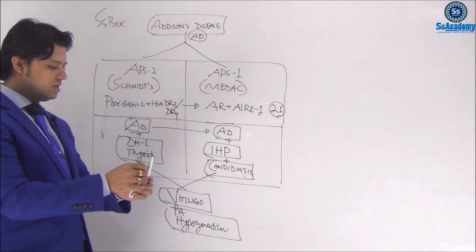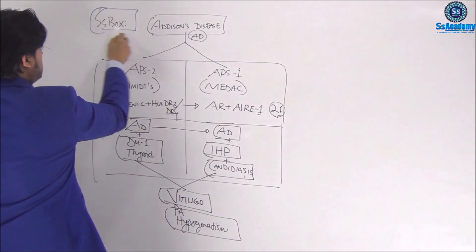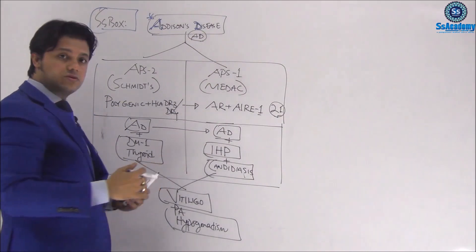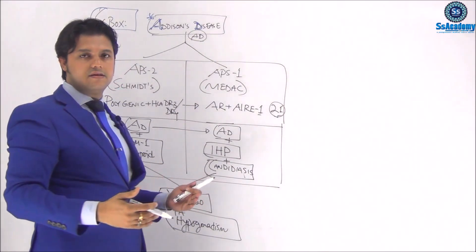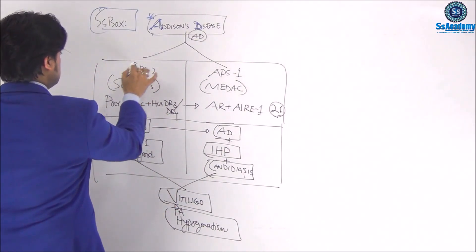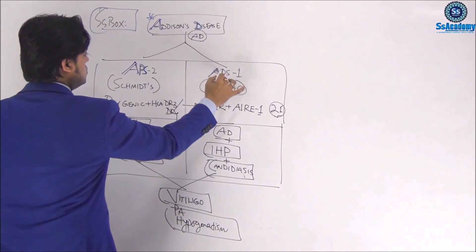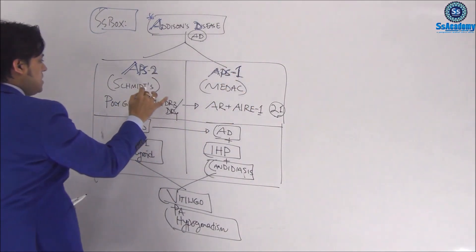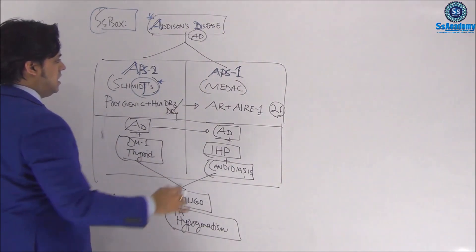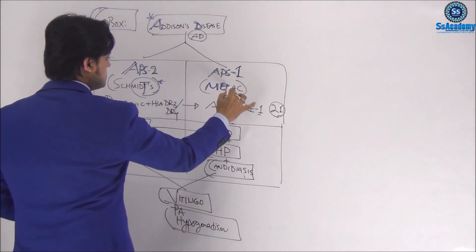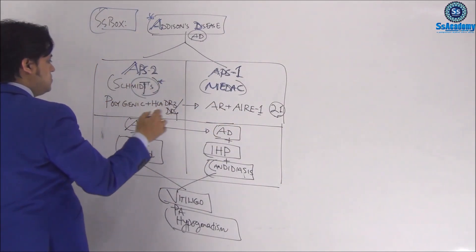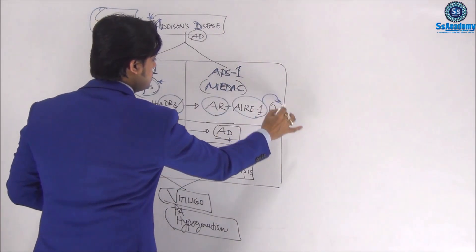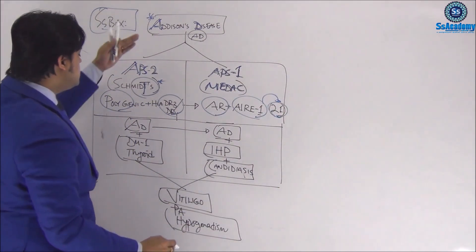I need to talk a little bit more so it will be easier to remember all these things together. This box once again: Addison's—autoimmune adrenalitis—is very strongly associated with APS type 2 and type 1. Type 2 is Schmidt, type 1 is MEDAC. These are polygenic with DR3 and DR4. In contrast, it's autosomal recessive with AIRE1, and 1 for 21.